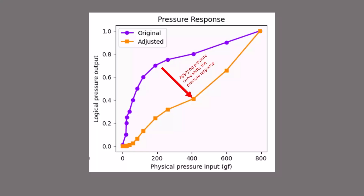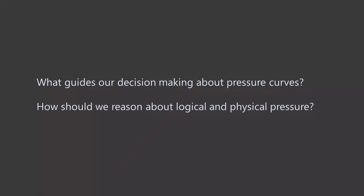The pressure response represents the behavior of a pen with respect to pressure. If you want a different behavior, that's when you use a pressure curve. In this example, the original pressure response is the purple line. We apply a pressure curve to it and get a new pressure response — that's the line in orange. This new pressure response has a very different shape; it's much more linear. Whatever shape a pressure response has, we need to develop some way to reason about it and understand what we want out of it.